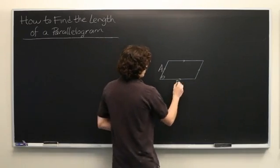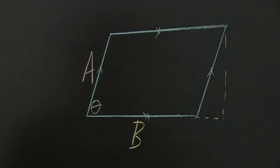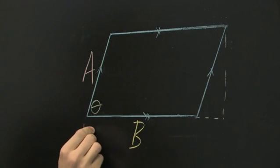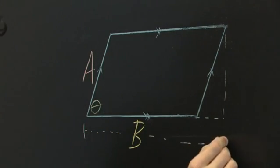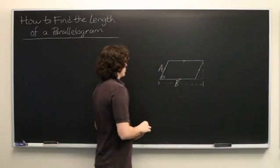What we want to find is this length here from the bottom left corner all the way out to here. So how are we going to do this?